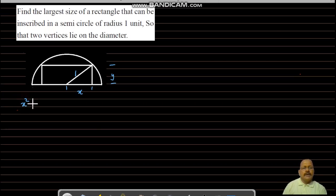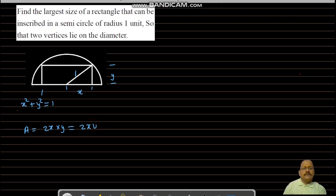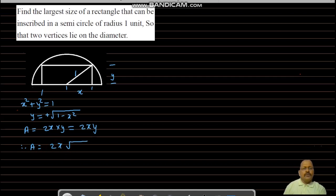Then we know that x² + y² = 1. In this problem, we want the largest size of rectangle — that means we want the area of this rectangle to be the largest. Area A = 2x · y = 2xy, due to symmetry the length is 2x. From the constraint, y = √(1 − x²), and therefore A = 2x · √(1 − x²).